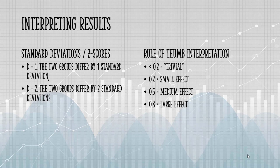If you're not very familiar with standard deviations or z-scores, you can use Cohen's original rule of thumb. Generally speaking, if you have a result that's less than 0.2, it's trivial and not significant. Small effects start at 0.2 and go up to 0.5, where it becomes a medium effect, and anything greater than 0.8 is a large effect. This is a rule of thumb, so these aren't set in stone.